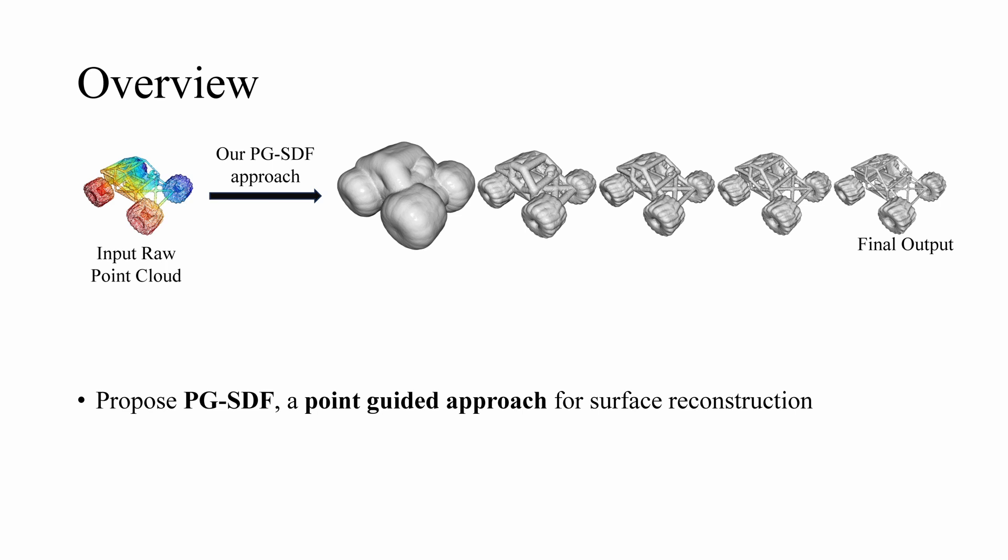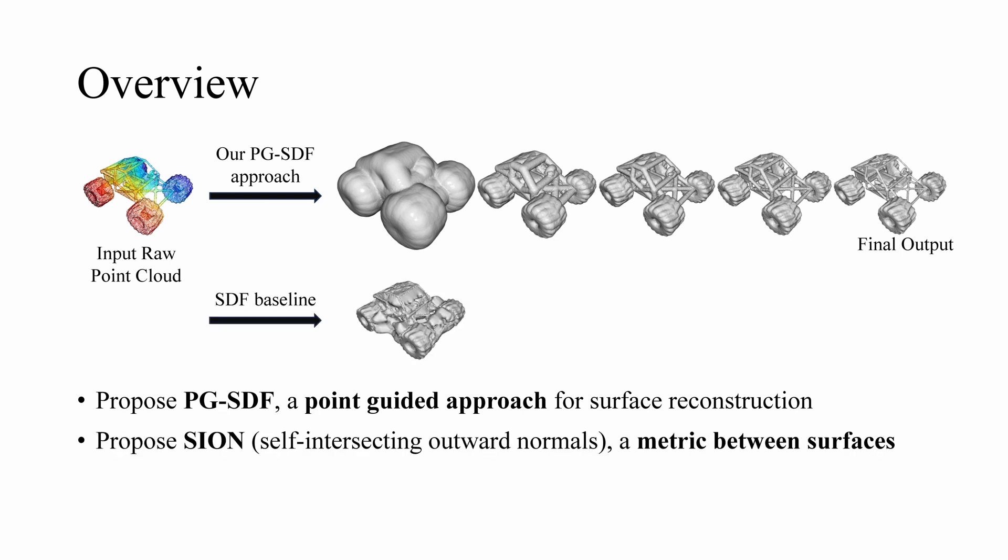We propose a point-guided approach for surface reconstruction from point clouds, called PGSDF, that iteratively deforms the reconstructed surface until it interpolates the input points. We analyze why previous SDF-based methods often fail on difficult shape geometry and propose a metric to quantify this. We also analyze our method in the context of homotopy methods, giving insight into why it works well on difficult shapes.